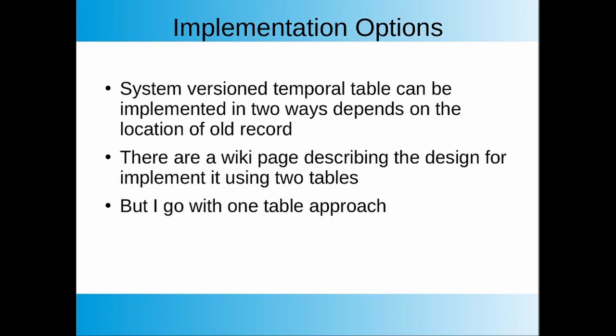In PostgreSQL, we have at least two designs for implementing System-Versioned Temporal Table. One is on the wiki page that describes implementing using two tables — one for history data and the other for current data. But rather than that approach, I propose to implement it using only one table for storing both current and history records, and it is on the current commitfest. I will talk about both approaches and describe more on my approach and its advantages.